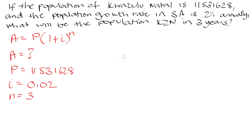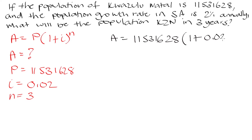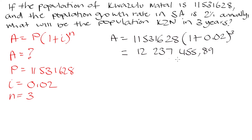Plugging these values into the formula: A = 11,531,628 × (1 + 0.02)^3. Putting this into your calculator gives 12,237,455.89. But remember, when dealing with population problems we can't have 0.89 of a person, so we round to the nearest whole number: 12,237,456. That is the population of KwaZulu-Natal in three years.